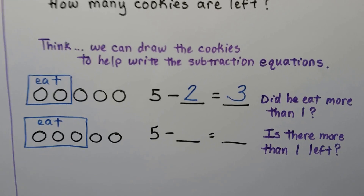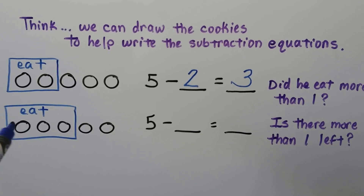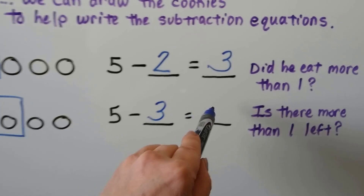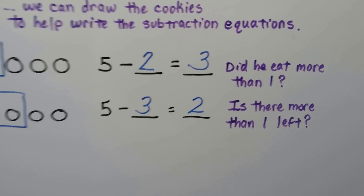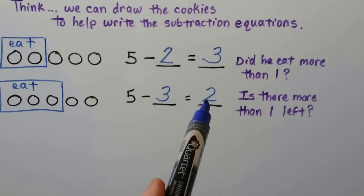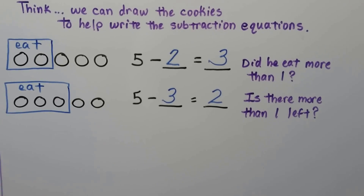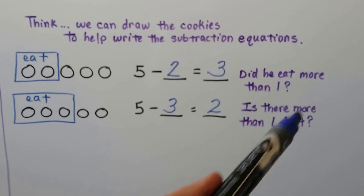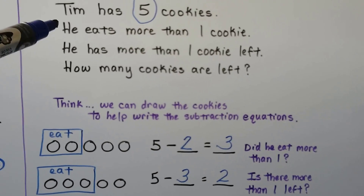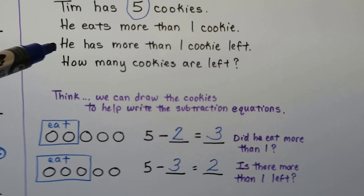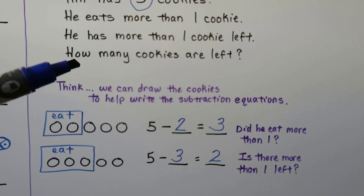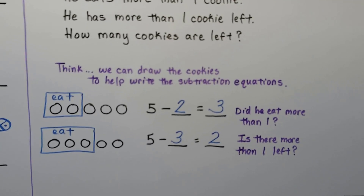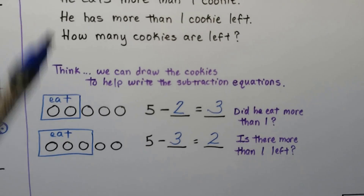We followed the rules from the word problem. He could also eat three — that's more than one — so we take away three and there are two cookies left over. Did he eat more than one? Yes, he ate three. Is there more than one left? Yes, there are two left. If we tried any other subtraction problems, it wouldn't satisfy the word problem. So five minus two equals three and five minus three equals two both work.